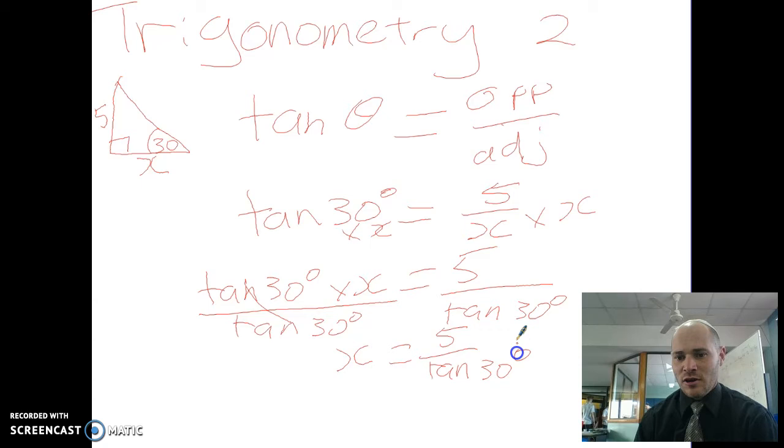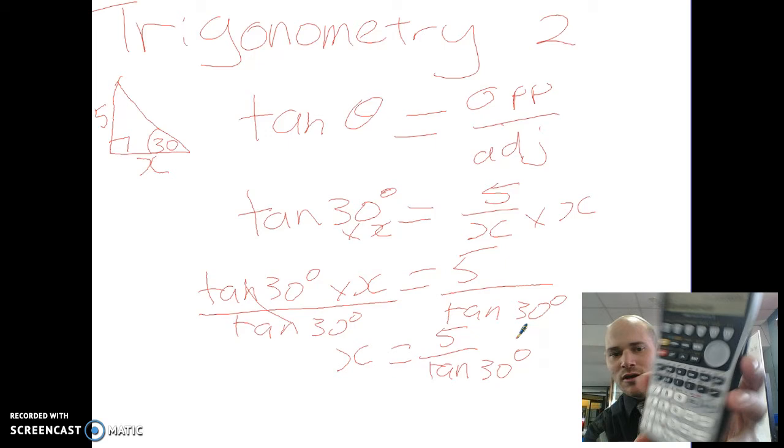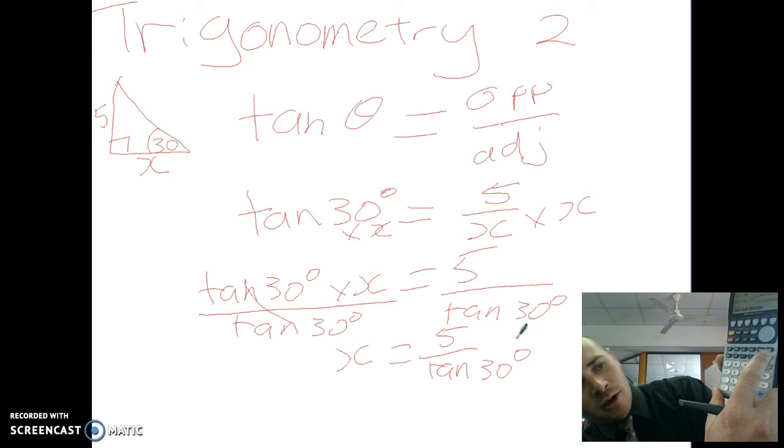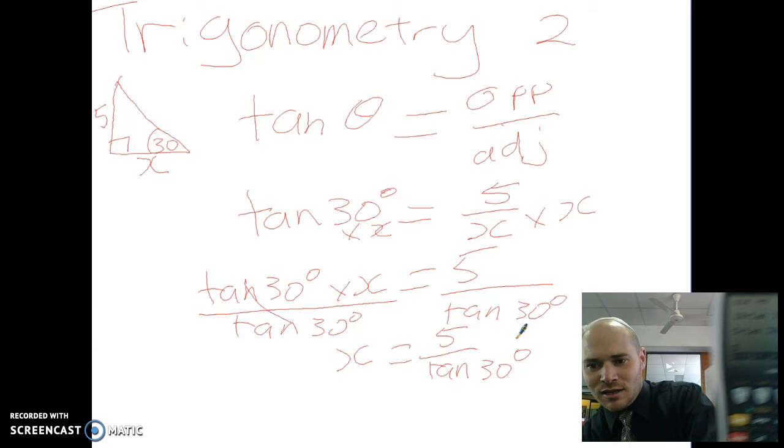They cancel each other out and here I'm left with x equals 5 over tan of 30. And that is exactly what I punch into my calculator. Check it. It's like reverse mode. I go 5 divided by tan 30, enter.